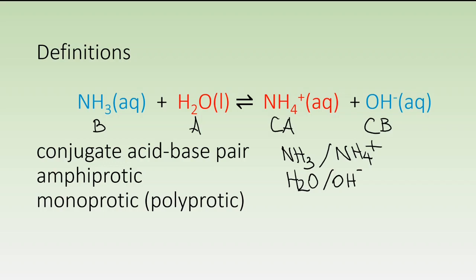In addition, a substance can be amphiprotic, meaning that depending on the context, it could either act like a proton donor or a proton acceptor. Water is a substance in here that behaves that way, but it's difficult to view that behavior without looking at the table on the next slide. We also typically only transfer one proton from an acid to a base, so we assume most of the time that substances are monoprotic.